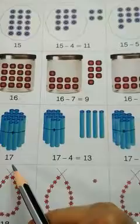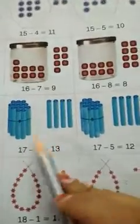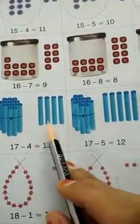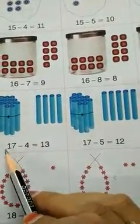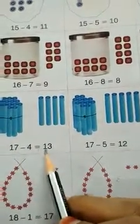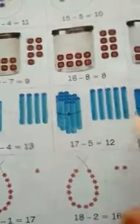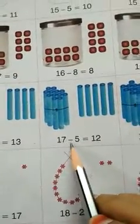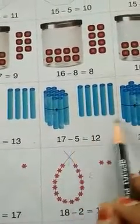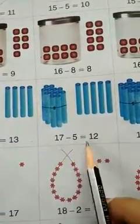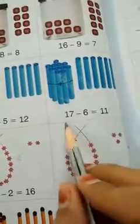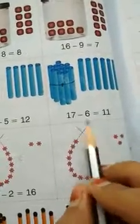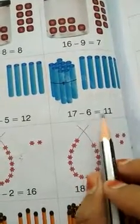Then, 17. 17 minus 4 is equal to 13. 17 minus 8 is equal to 5, which gives 12. 17 minus 6 is equal to 11.